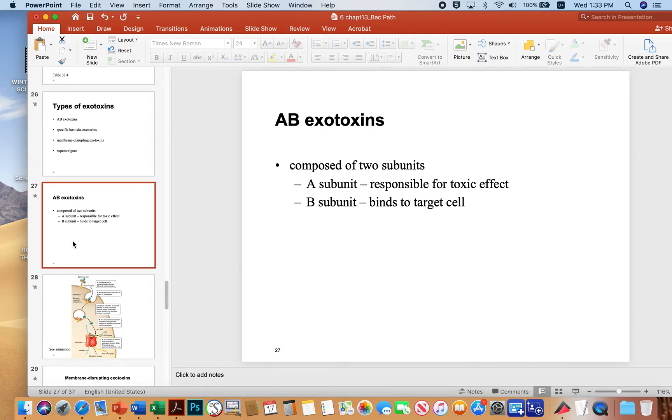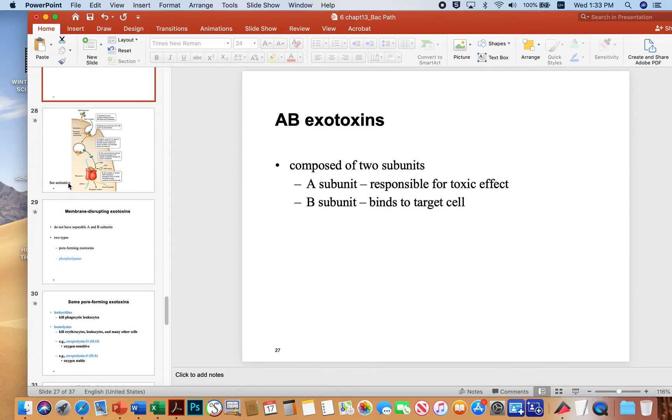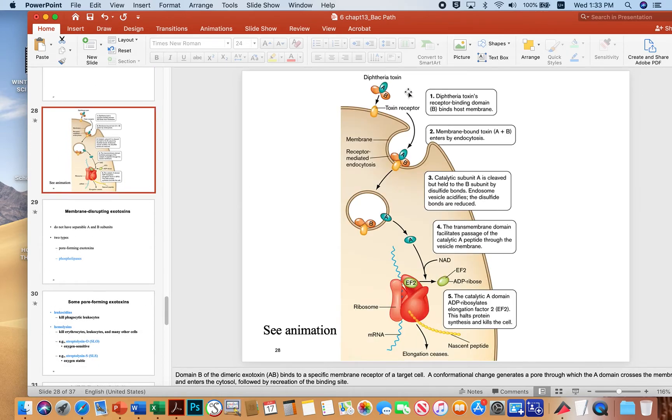So AB toxins, as I said, consist of an A portion and a B portion. The A portion is responsible for the toxic effect. And the B portion really just binds the material, the toxin, to the surface of the cell. And so that looks something like this. So here's an AB toxin. In this particular case, it's diphtheria toxin.